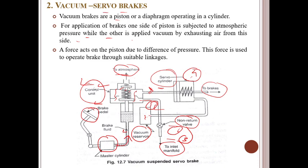When the brake pedal is free, the upper valve in the control unit is closed and the lower one is open. Thus both sides of the piston in the servo cylinder are exposed to engine vacuum. When the brake pedal is applied, the brake fluid pressure pushes the piston in the control unit upward, closing the lower valve and opening the upper valve. Thus the left side of the servo piston is exposed to atmospheric pressure while vacuum acts on the right side. This causes the servo piston to move right, and this movement is used to apply the brakes at the wheel through mechanical or hydraulic linkage. The force required from the driver is considerably reduced, and practically the whole braking effort is provided by the engine vacuum.